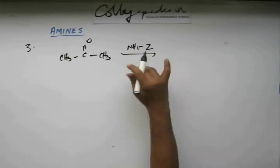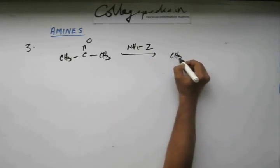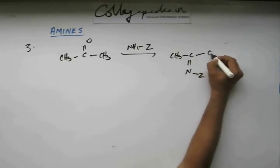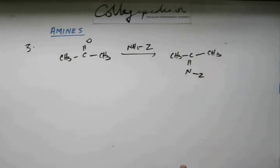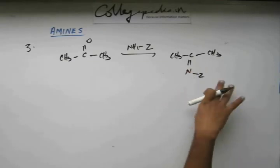This is NH2Z. Z is a group that is attached to nitrogen, any group. When you do this kind of reaction, then you get this. If you remember, this was the reaction that we called as addition elimination reaction, and depending upon this Z you had the name for this compound.